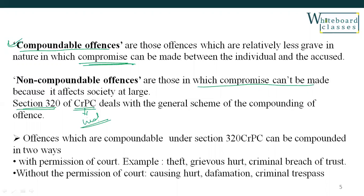Examples of compoundable offences include defamation and adultery. Non-compoundable offences are those that affect society at large — such as murder, kidnapping, and rape. These are all non-compoundable offences and cannot be compromised between the parties, i.e., between the accused and complainant. Serious offences cannot be compromised. The list of compoundable and non-compoundable offences is clearly given under Section 320 of CRPC.